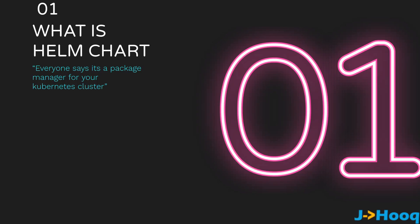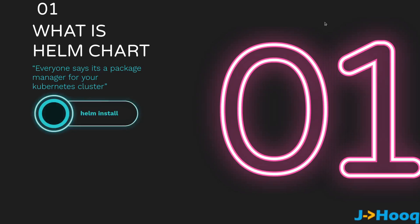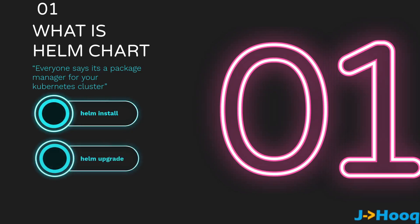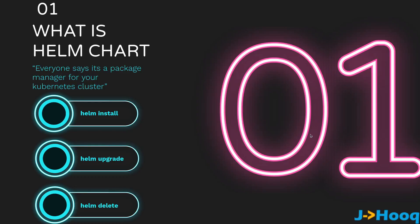Moving to Part 1: what is Helm Chart? Everyone says it's a package manager for your Kubernetes cluster. If you are familiar with Linux, we have apt or yum package managers, which are responsible for upgrading, installing, and uninstalling software packages. Helm Chart is just like that — a package manager for your Kubernetes cluster. With it, you can install, upgrade, or delete your Helm Chart.